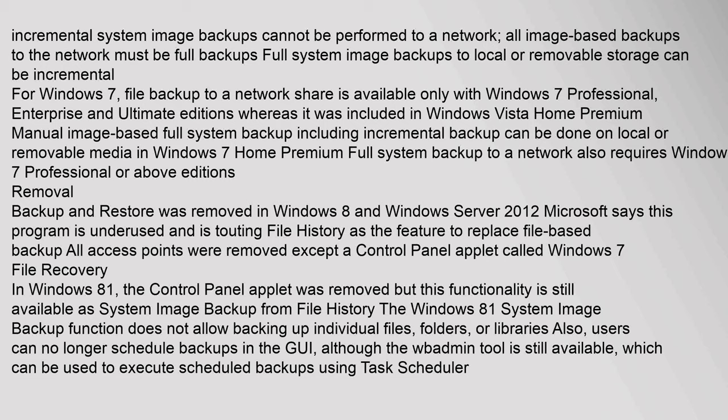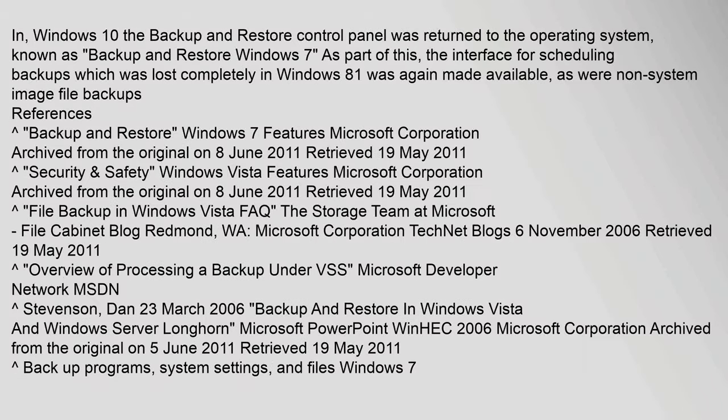Backup and Restore was removed in Windows 8 and Windows Server 2012. Microsoft stated the program was underused and touted File History as the feature to replace file-based backup. All access points were removed except a Control Panel applet called Windows 7 File Recovery. In Windows 8.1, the Control Panel applet was removed, but this functionality is still available as System Image Backup from File History. The Windows 8.1 system image backup function does not allow backing up individual files, folders, or libraries, and users can no longer schedule backups in the GUI, although the WBAdmin tool is still available for executing scheduled backups using Task Scheduler. In Windows 10, the Backup and Restore Control Panel was returned to the operating system, known as Backup and Restore (Windows 7), and the interface for scheduling backups, as well as non-system image file backups, were again made available.